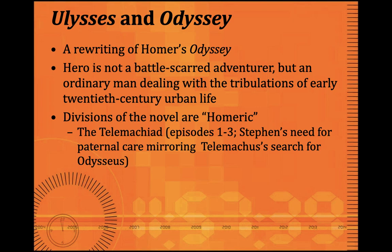The divisions of the novel are Homeric. The Telemachia is the first part, comprising episodes one to three. In the morning of 16th June 1904 you see Stephen's need for paternal care. Stephen has a father, Simon Daedalus, who is a friend of Leopold Bloom, but Stephen cannot identify with or appreciate his father. He is searching for a father figure and finding it in Bloom — mirroring the search of Telemachus for Odysseus.